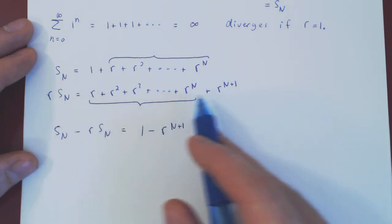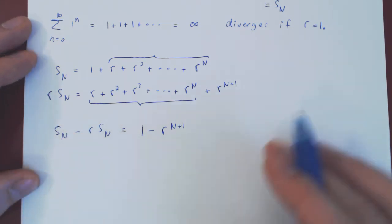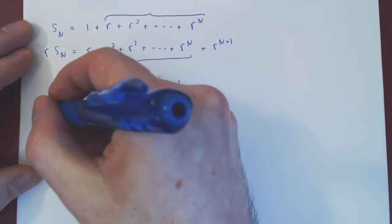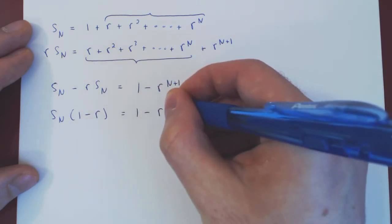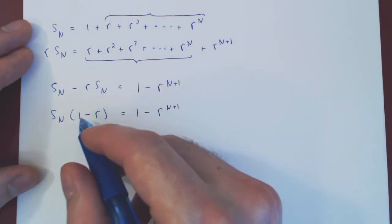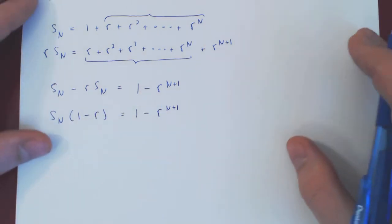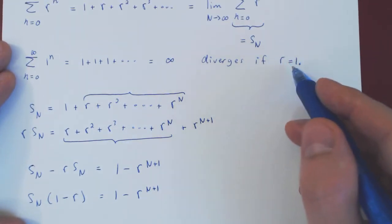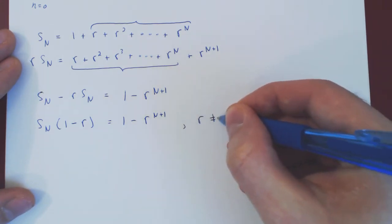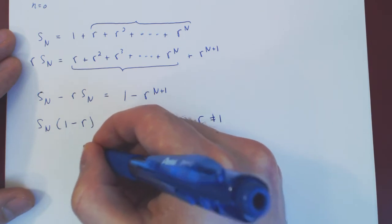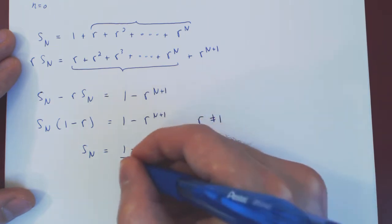The sum completely disappears and now we can isolate for S_N. Factoring S_N on the left, we get S_N times (1 minus r) equals 1 minus r to the N plus 1. It's crucial that r is not 1, because we want to divide by 1 minus r. But we already know that the series diverges when r equals 1, so we can assume r is not 1. Therefore S_N equals (1 minus r to the N plus 1) over (1 minus r).